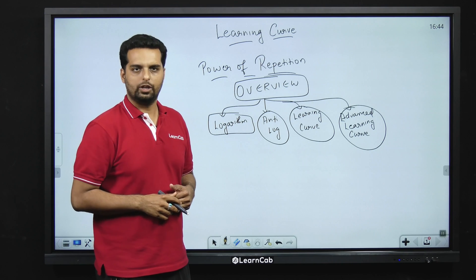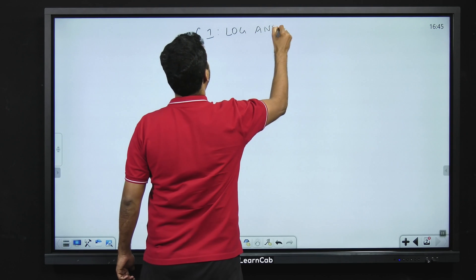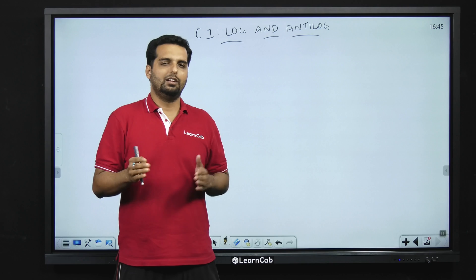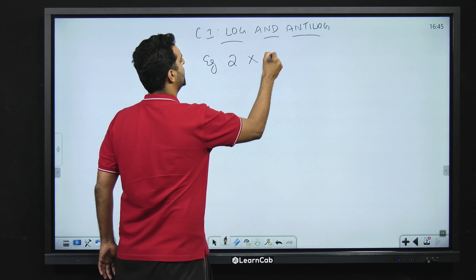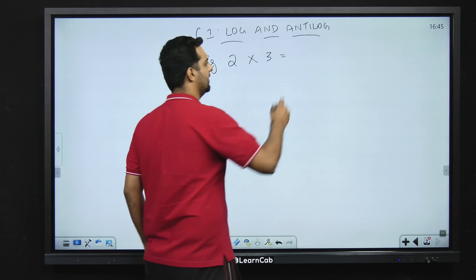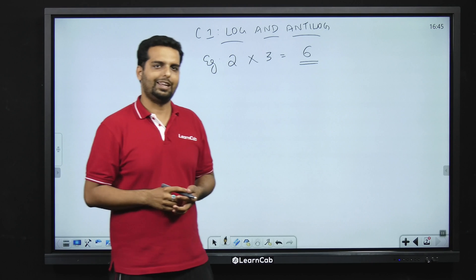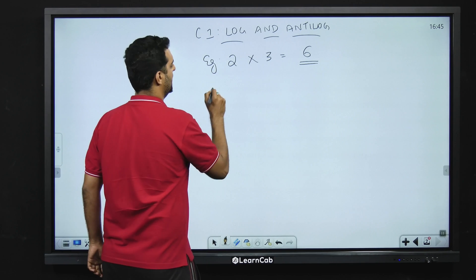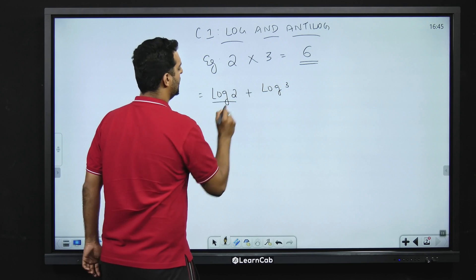So let's start with the first concept of logarithm. Log and antilog — I will explain this with an example rather than theory. I want to find out what is 2 into 3. The answer is 6. The same answer we can also derive using our logarithm table. Logarithm says that if you are trying to multiply, in logarithm you just have to do addition. So what we do here is: log 2 plus log 3. Now this log has got two parts.